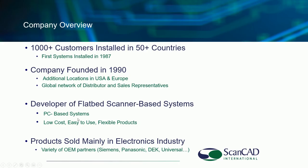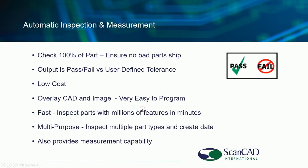Most of the VPI systems are sold into the electronics industry — PCB assembly, PCB fabrication, etc. Over the years, these systems have been packaged with some 12 different OEM partners, including Siemens, Panasonic Tech, Universal, and others. The ScanInspect VPI system is an automatic inspection and measurement system. We check 100% of the part, performing a pass or fail using a user-defined tolerance. This system is low-cost, easy-to-use, easy-to-program, literally inspecting millions of features in minutes, and it is multi-purpose with measurement capability.